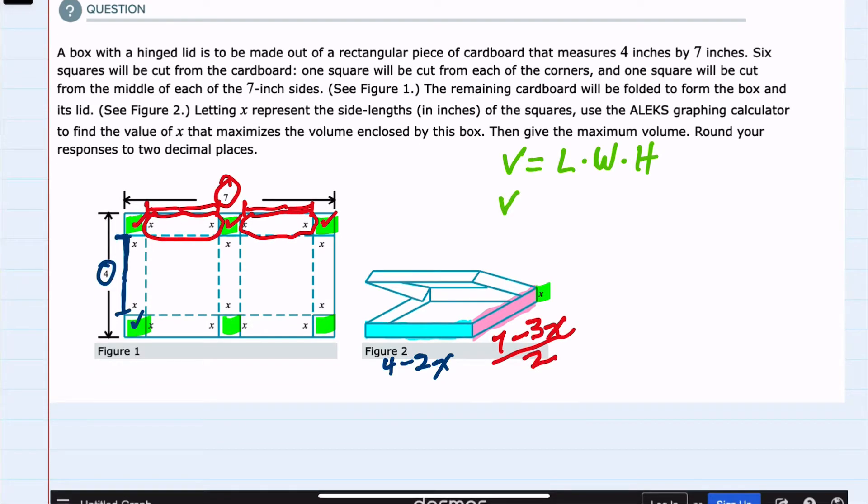From here, the volume of this shape can be given by just multiplying these three dimensions together. I'll start with the larger one, 7 minus 3x over 2, and then the other dimension in the front, 4 minus 2x, and then the box is x units high. So we found our volume function.